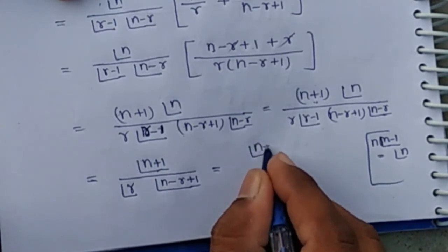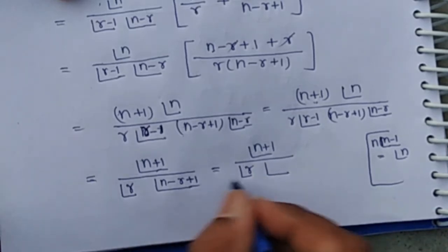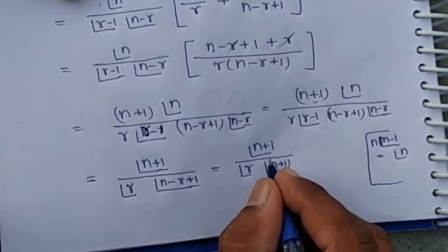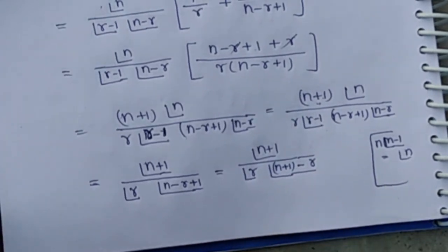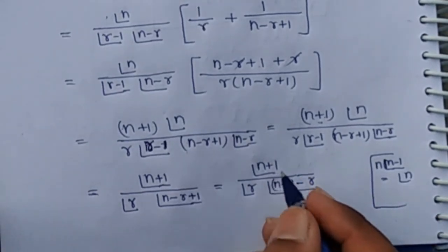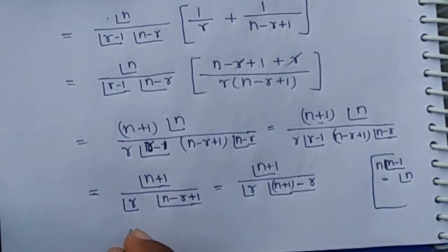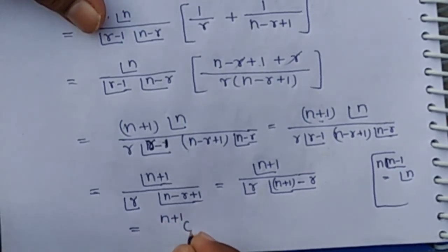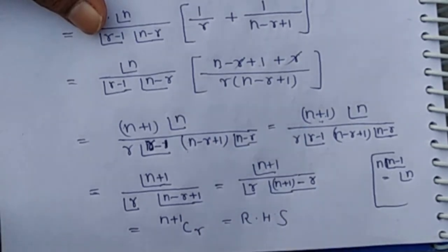Now we have factorial n plus 1 over factorial r, and n minus r plus 1 can be written as n plus 1 minus r. If we let n as n plus 1, then we have factorial n over factorial r times factorial n minus r, which is the formula for nCr. So the value is n plus 1Cr. Hence proved.